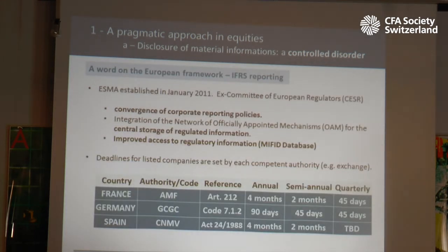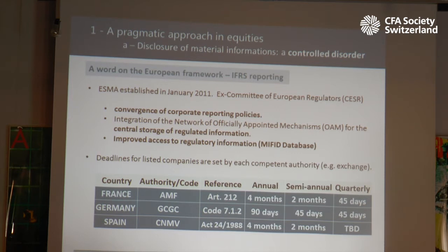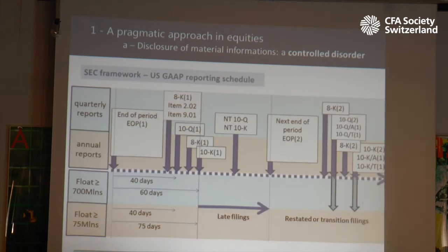A quick word on Europe. We have similar rules for European countries and firms reporting under IFRS. Policy convergence falls within the jurisdiction of the European Securities and Market Authorities — ESMA — established in January 2011. ESMA is also working with the network of officially appointed mechanisms — the OAMs — for the central storage of regulated information. I have reported here some deadlines for France, Germany, and Spain for the annual, semi-annual, and quarterly filings. The harmonization takes time, like pretty much anything in Europe. Taking everything mentioned so far for the US case at least, this is how the final schedule looks like.